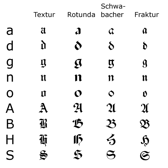Fraktur is a calligraphic hand of the Latin alphabet and any of several blackletter typefaces derived from this hand. The blackletter lines are broken up — their forms contain many angles when compared to the smooth curves of the Antiqua typefaces modeled after antique Roman square capitals and Carolingian minuscule. The term Fraktur or Gothic is sometimes applied to all of the blackletter typefaces known in German as Gebrochene Schrift, meaning broken script.